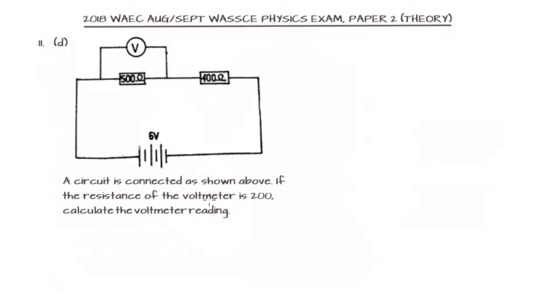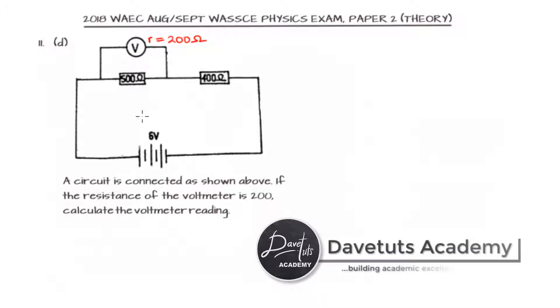In this question we are told that the circuit is connected as shown and the resistance of the voltmeter is 200 ohms. So locating the voltmeter, R is 200 ohms. We have to calculate the voltmeter reading. Now we need to actually analyze this circuit. Ideally the same current will flow in series, so the current across the circuit, current I, we can evaluate.